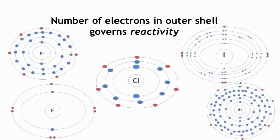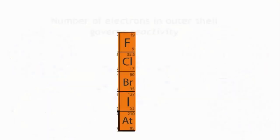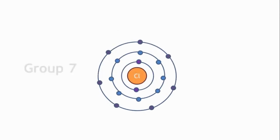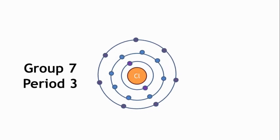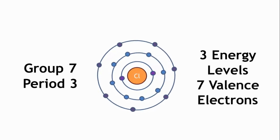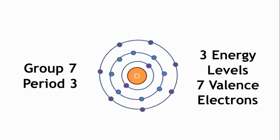The properties show a gradual change going down the group, as we go from period to period. So if we look at group 7 again, we can see that they are each in a different period in the periodic table, telling us that each element in this group has its outer electrons on a different shell. So chlorine is in group 7, period 3. Therefore, it has three energy levels, with 7 electrons in its outermost shell.